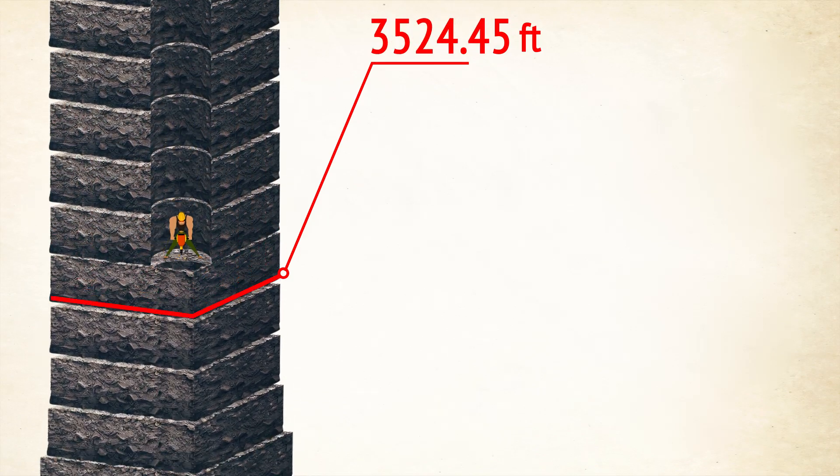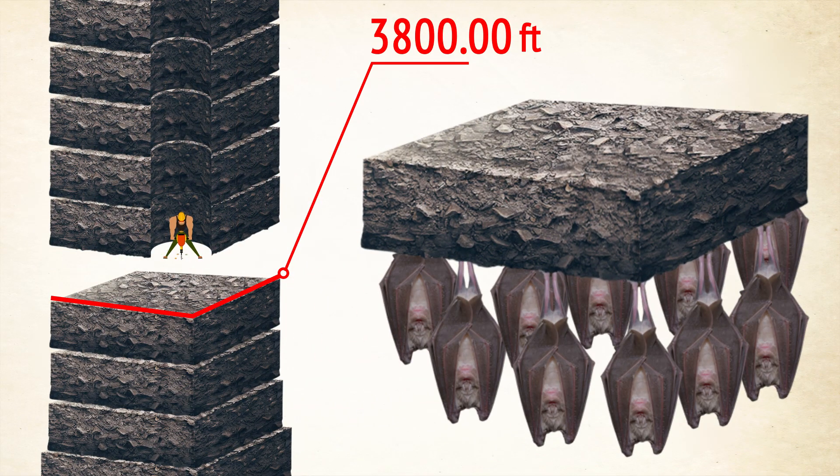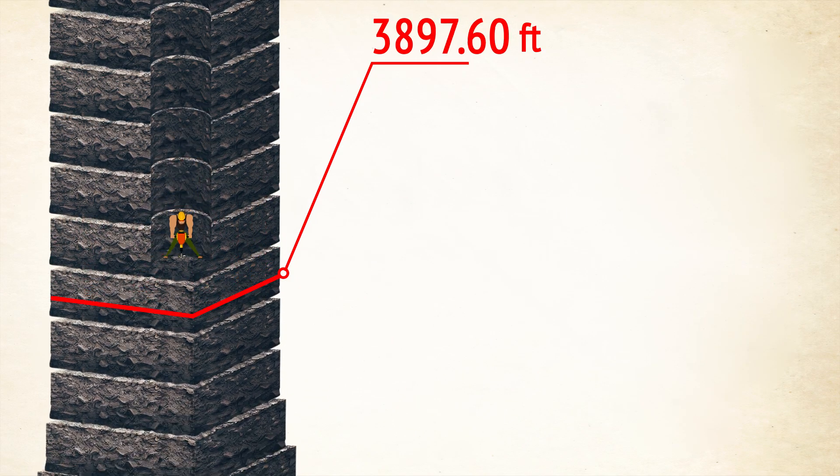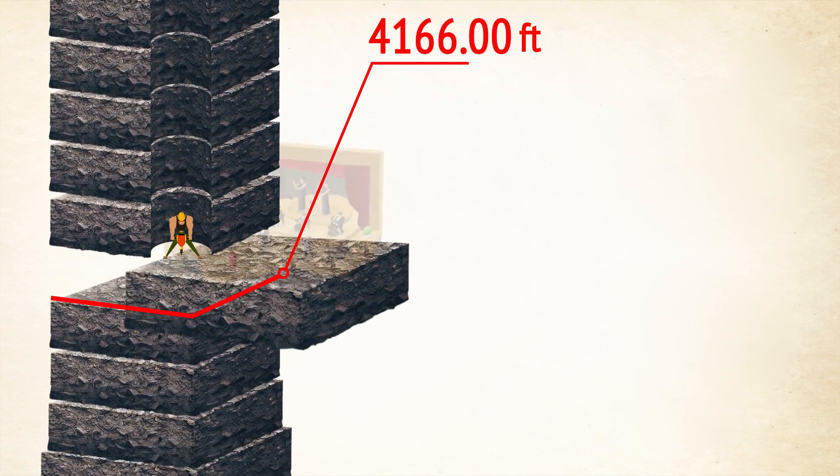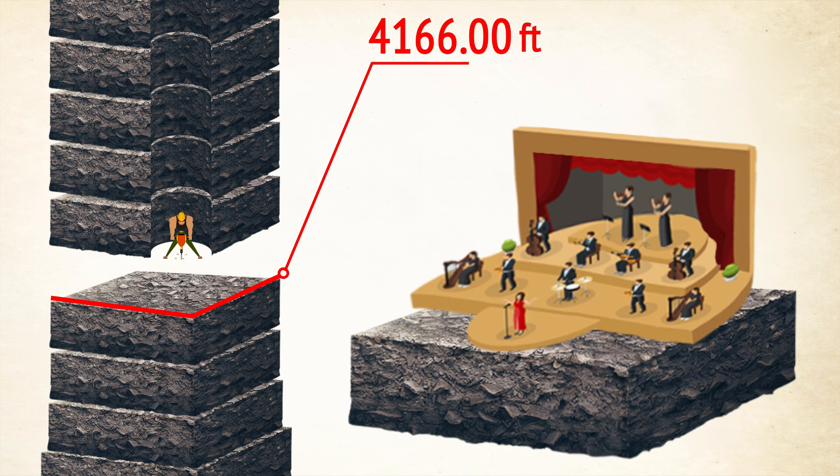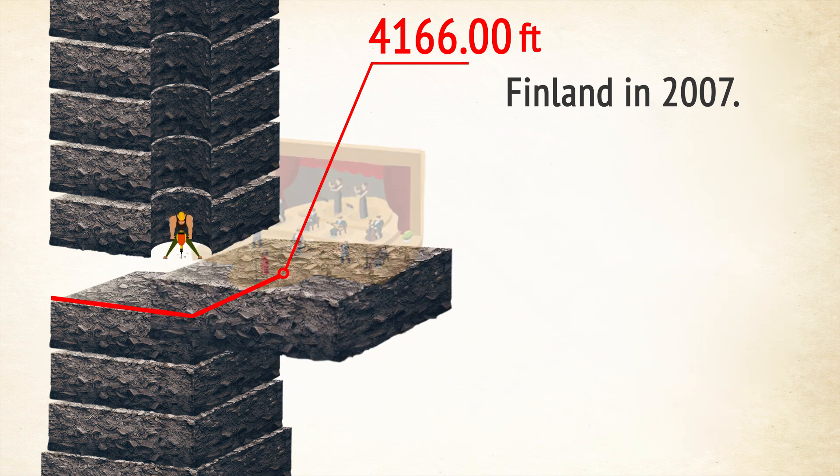At a depth of 3,800 feet, there's the deepest bat colony in the world. About 1,000 brown bats spend every winter in a zinc mine in New York. The deepest concert in history took place at a depth of 4,166 feet in a mine in Finland in 2007. The performer was a band called Agonizer.